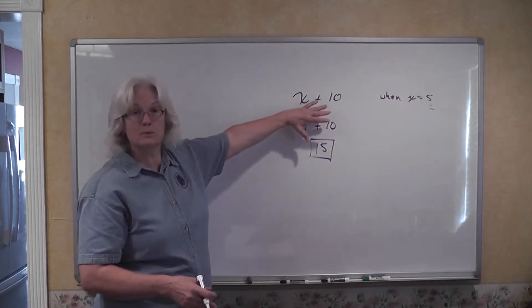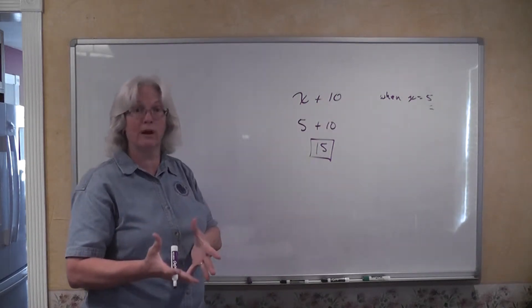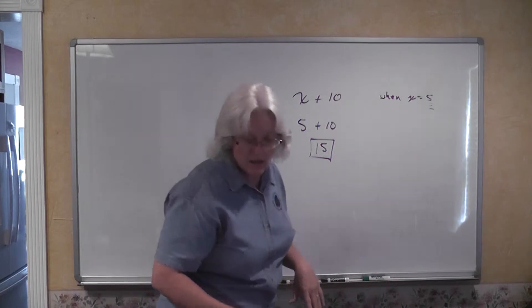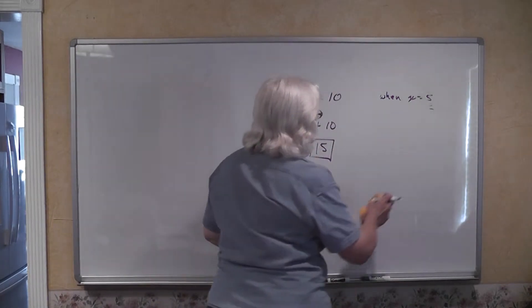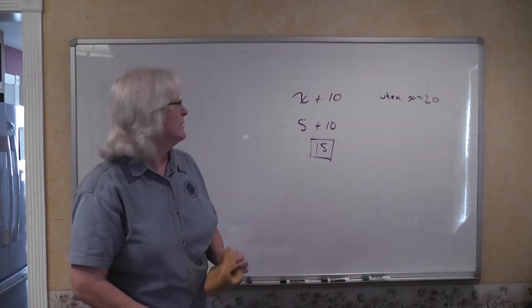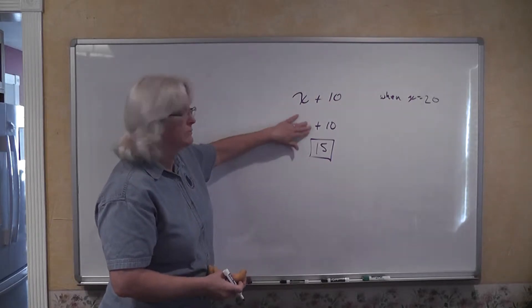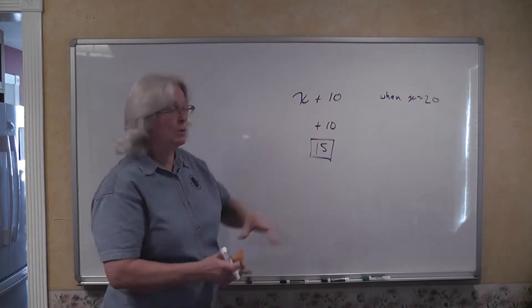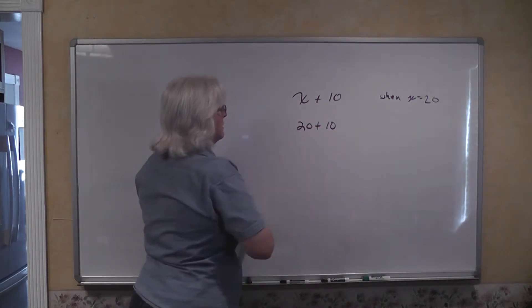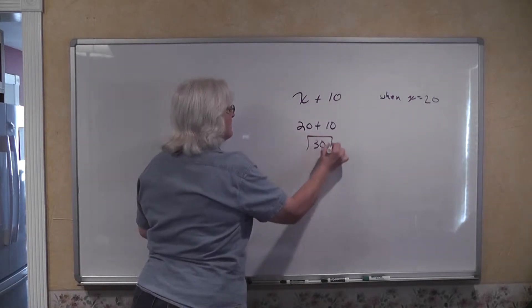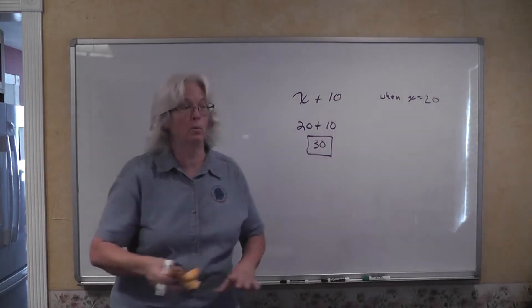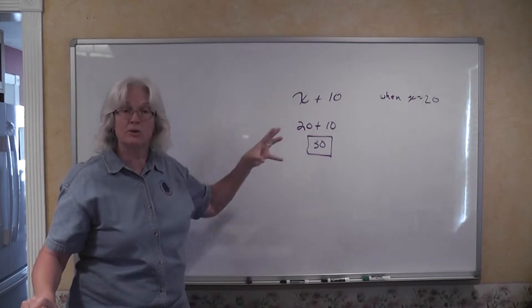Now is this expression x plus 10 always going to have a value of 15? Well no. It's going to depend on what x is. So they may say well what happens if x is equal to 20. When x is equal to 20 rather than substitute a value of 5 we're going to replace the x with 20. We have 20 plus 10 which of course now gives us a value of 30 for that entire expression. And this is all they mean when they talk about evaluating algebraic expressions.